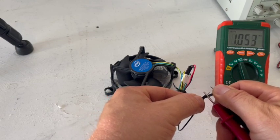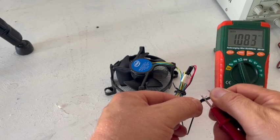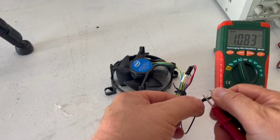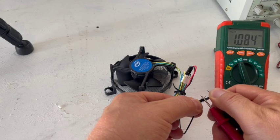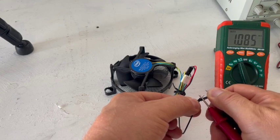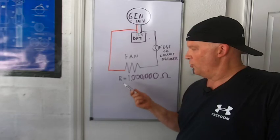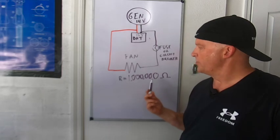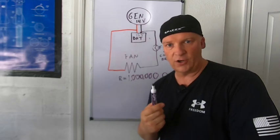What do we got? We got one mega ohm. One million ohms and some change there. So 1.084 mega ohms. That's a lot of resistance. So the resistance is equal to one million ohms. We have the resistance. We have the voltage. Now we're going to calculate the current.